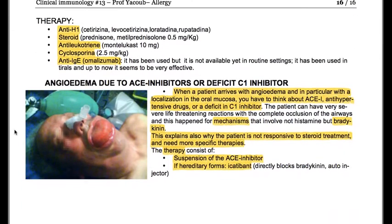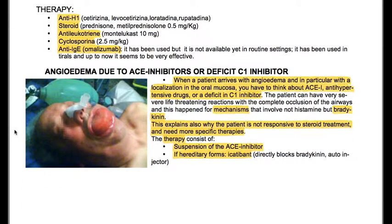As therapy for chronic urticaria, we can use antihistamines H1 (cetirizine, levocetirizine, loratadine, rupatadine), steroids like prednisone or methylprednisolone at 0.5 mg per kg, antileukotrienes (montelukast), cyclosporine at 2.5 mg per kg, and anti-IgE therapy with omalizumab, which has been used in trials and appears to be very effective, though not yet available in routine settings.